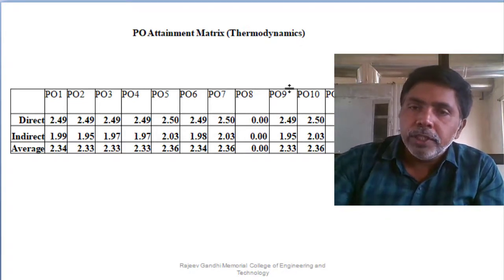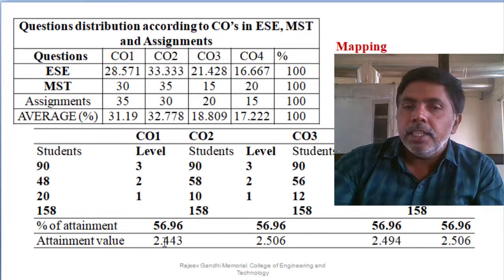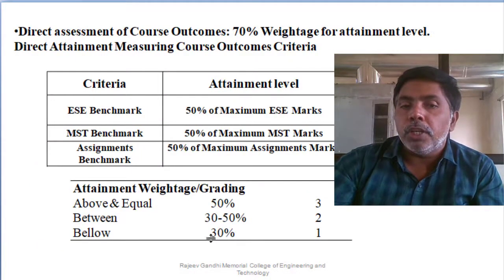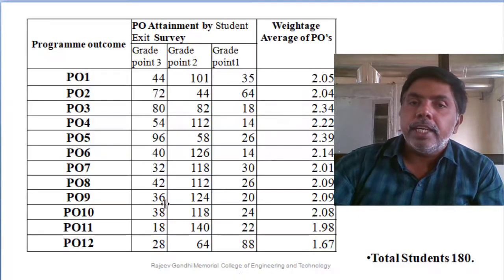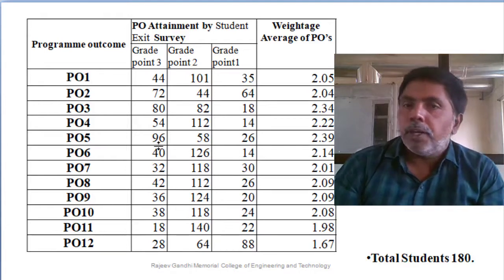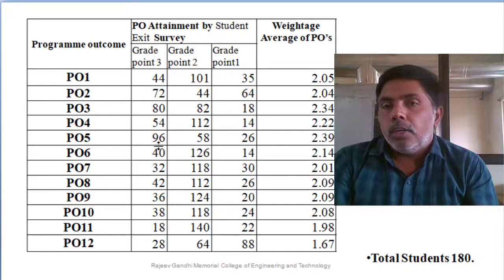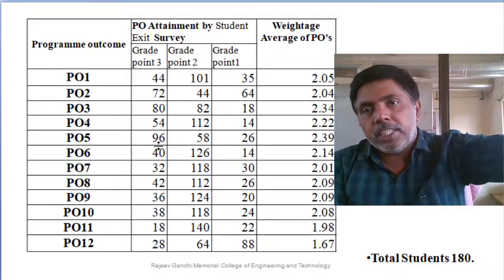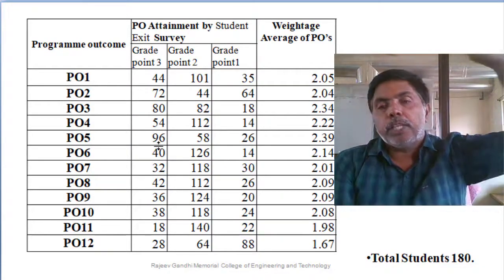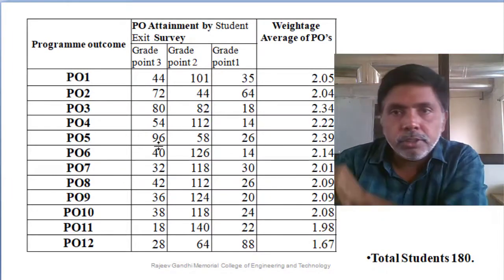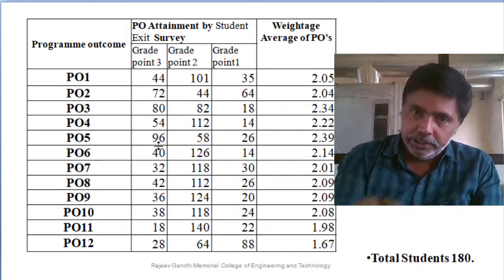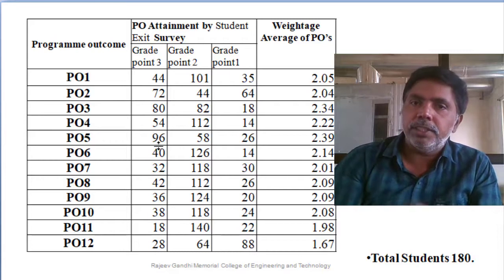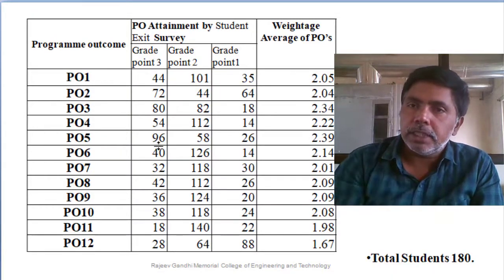Next year, increase the benchmark — from above 50% to 60% — and enhance the teaching-learning method accordingly. A second indirect method approach is to survey alumni, outgoing students, and employers directly on program outcomes. Average the yearly direct method PO attainment across all four years, then combine with indirect survey results for a comprehensive attainment picture.